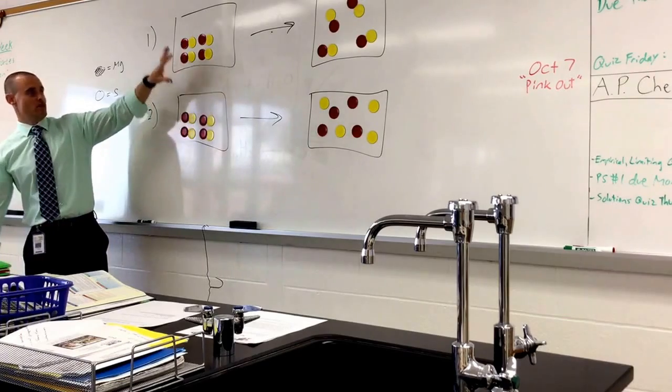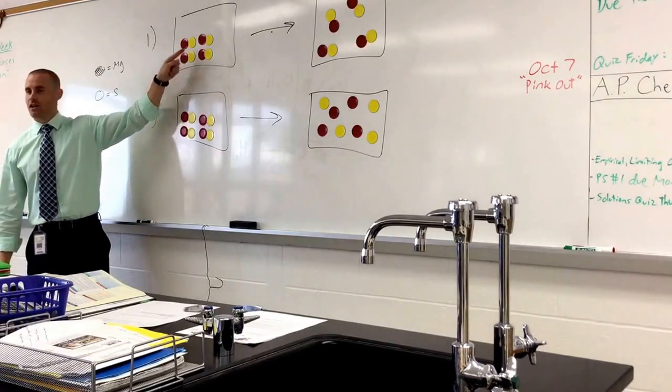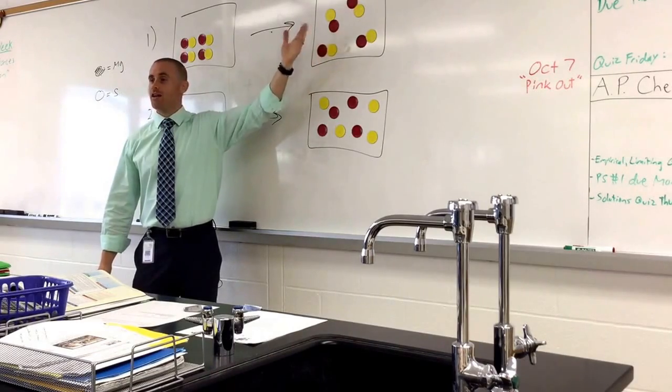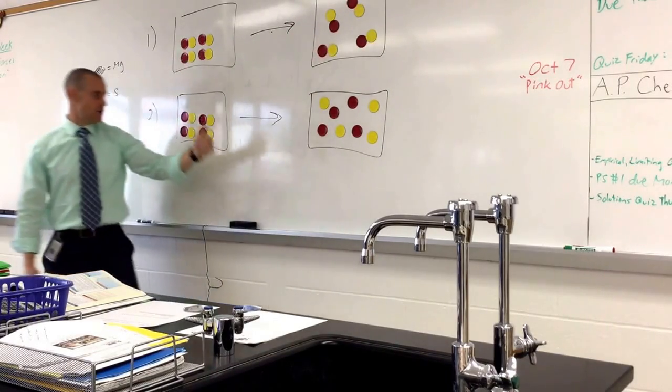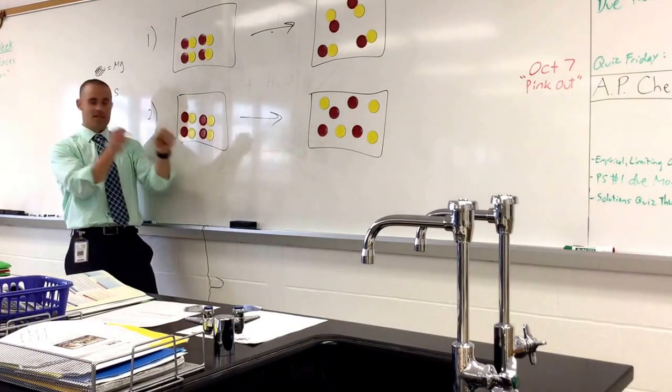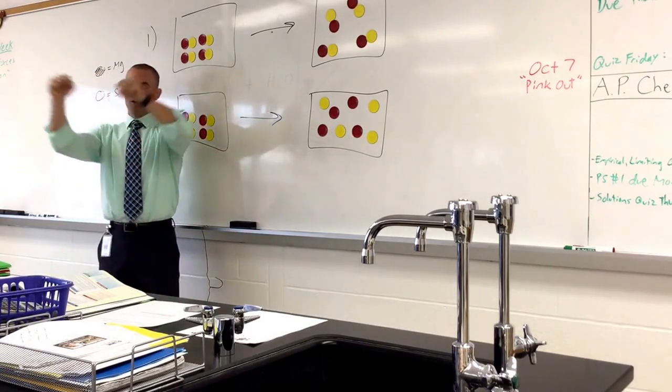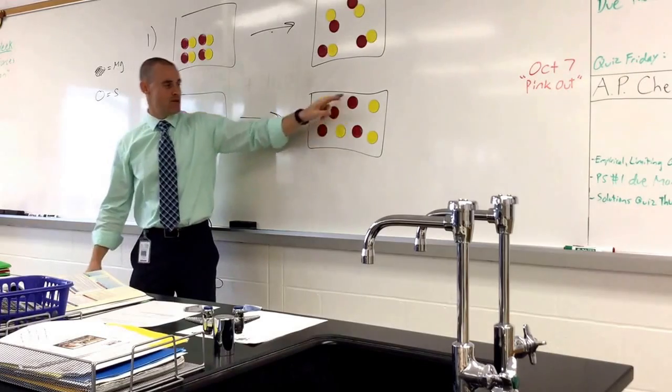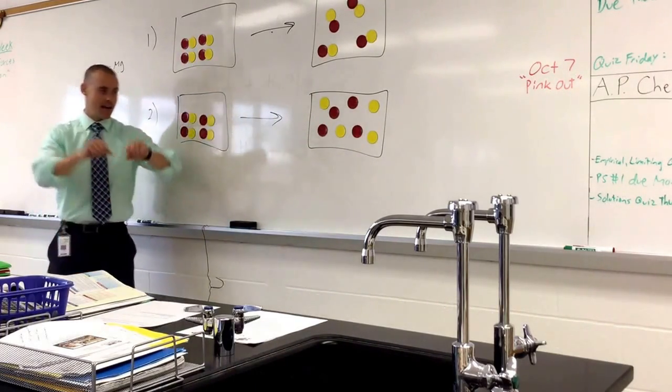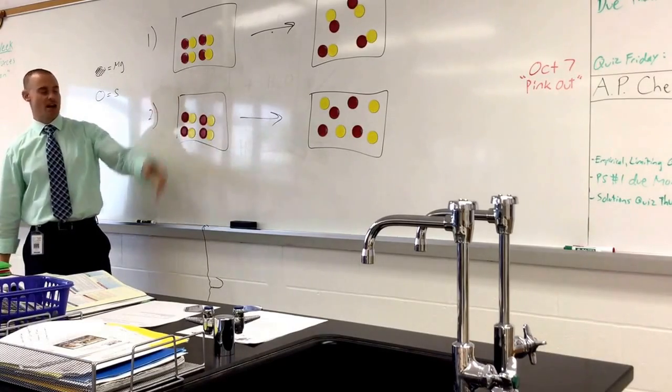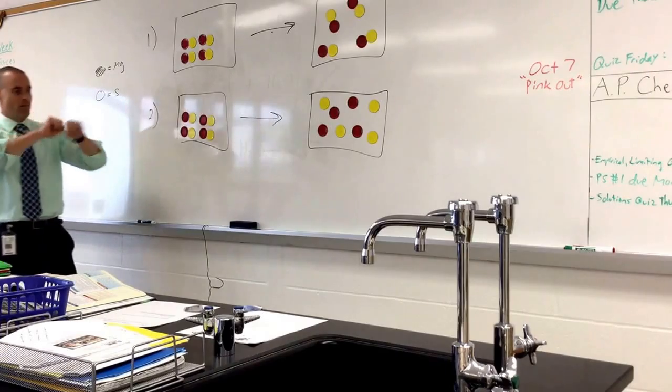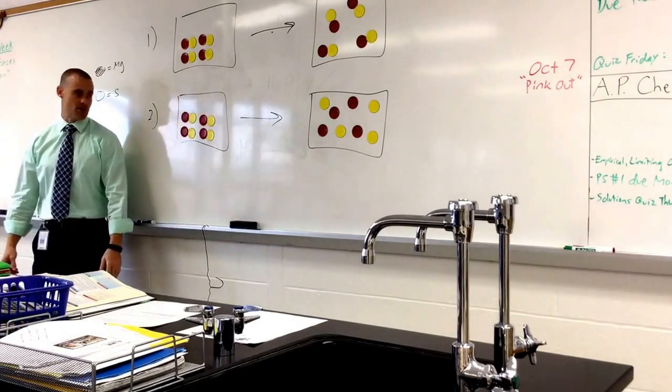So if we started as, what does that look like? Solid. And we end as a liquid or gas, right? Phase change. Physical. Here we're a solid. Here we're a solid compound. Two elements together as a compound. We rip those elements apart. Now we have Mg and S just kind of floating around by themselves. So we broke that compound up. We changed the composition.